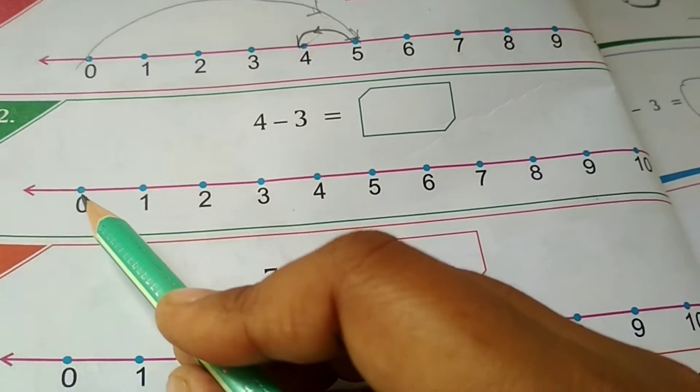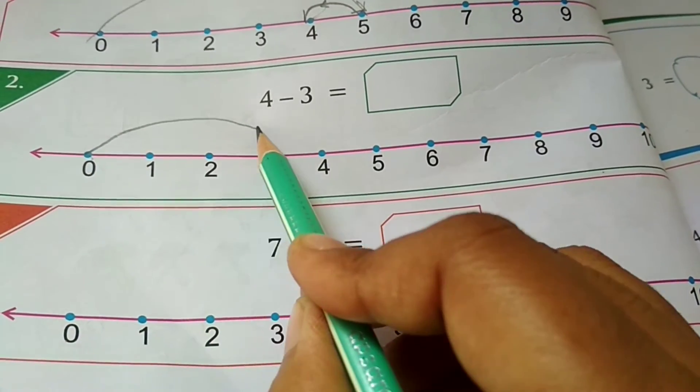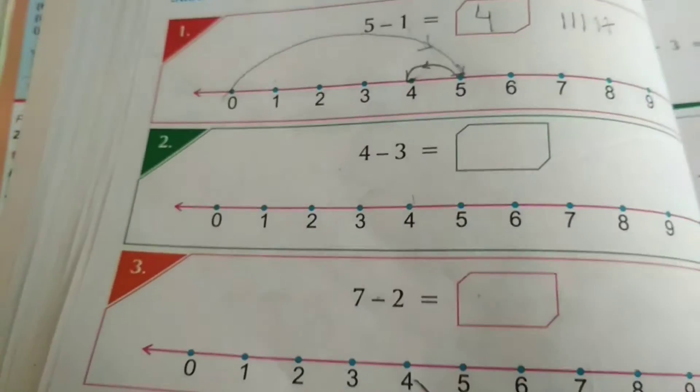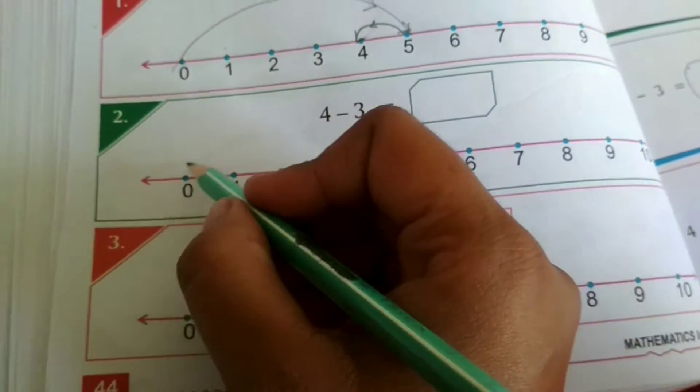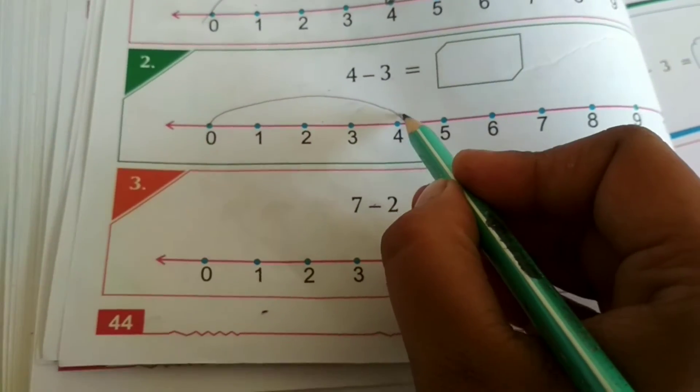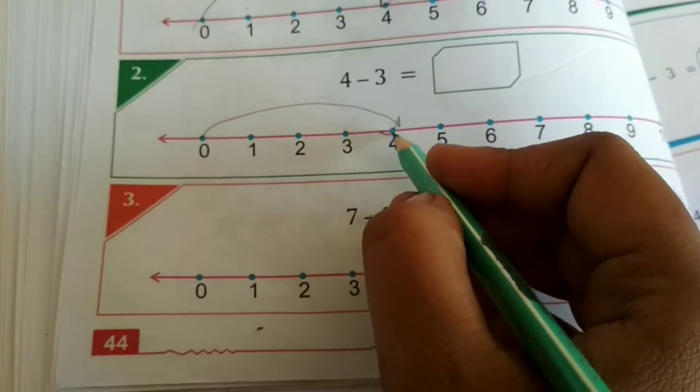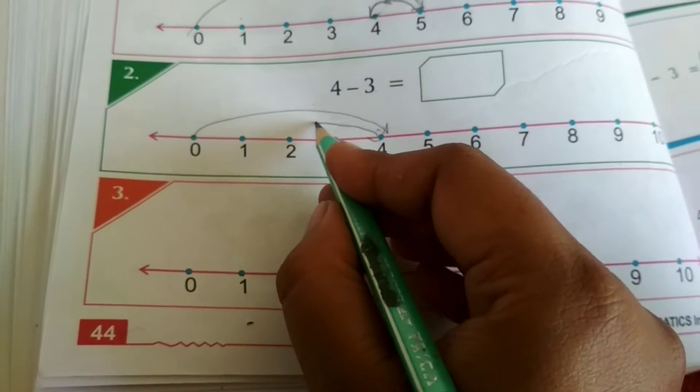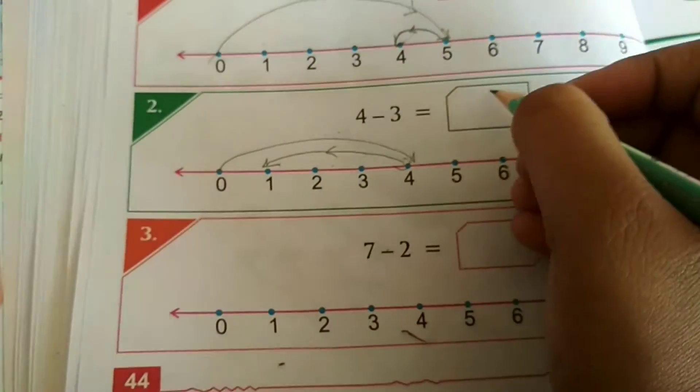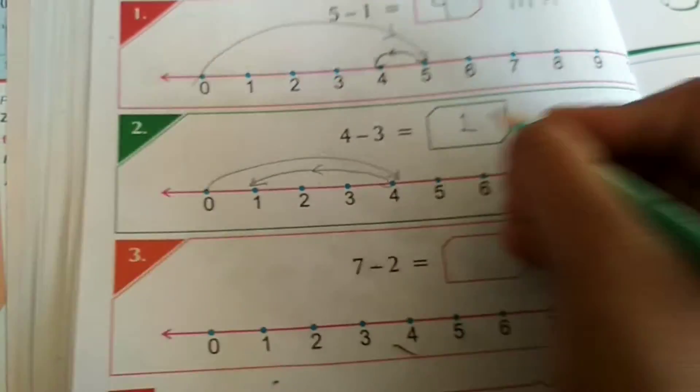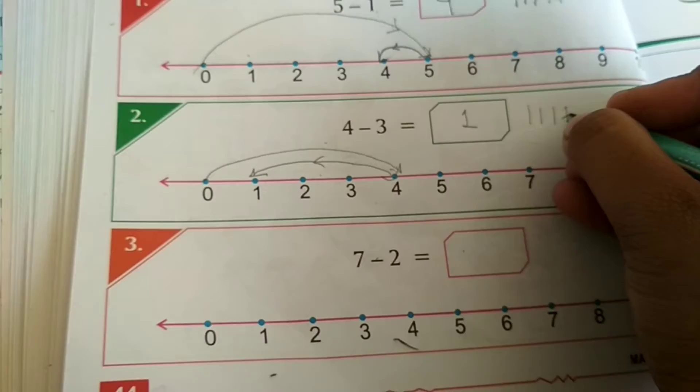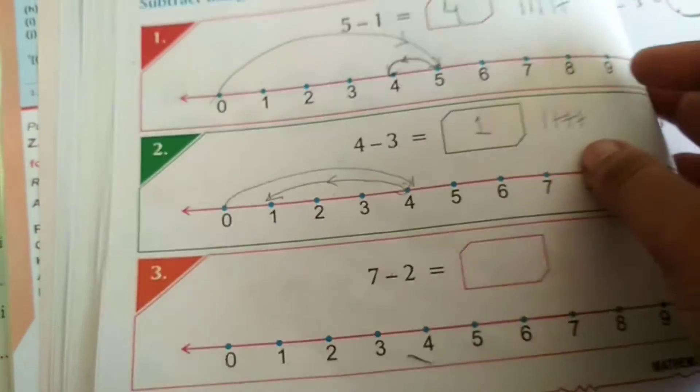4 minus 3. So 0 to 4. 4 minus 3. So 0 to 4. Then 4 minus 3 is 1. You can see also 1, 2, 3, 4 minus 1, 2, 3. That is 1. Right? Number 3, try by yourself.